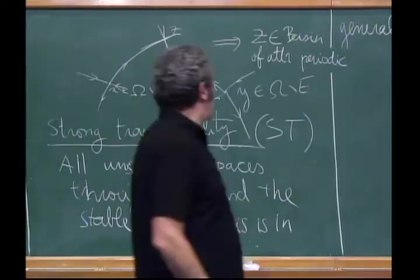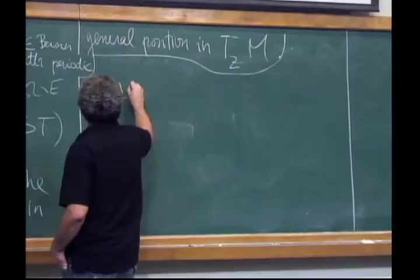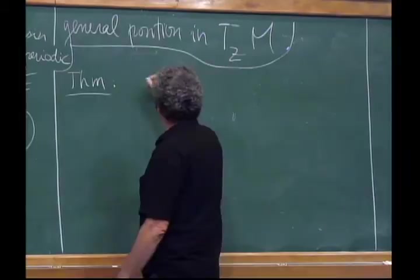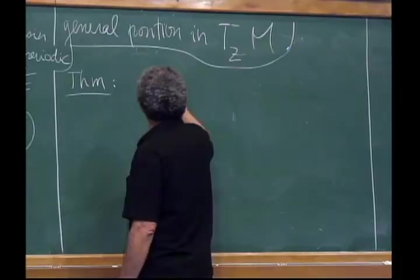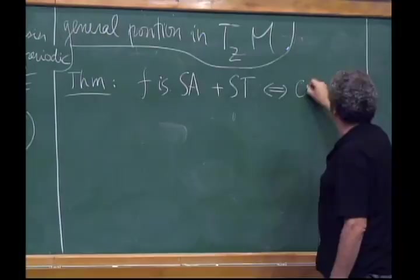This is the transversality condition we need when working with endomorphisms. The theorem — combining many results into one statement — is: if f is Strong Axiom A and Strong Transversality, if and only if it is C1 stable.